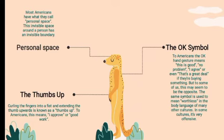The first is personal space. Most Americans have what they call personal space — an invisible boundary around a person. Depending on your country of origin, you may think nothing of bumping shoulders with someone in a crowded market or leaning in close to hear someone. But Americans will go out of their way to give people space.